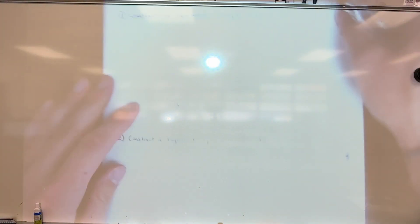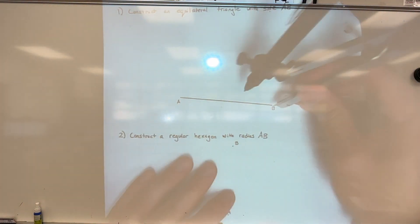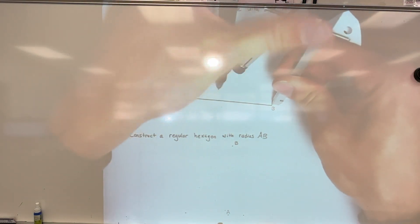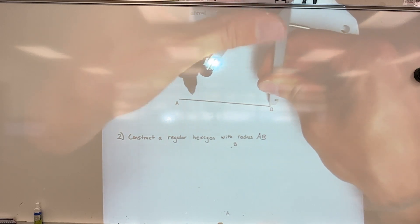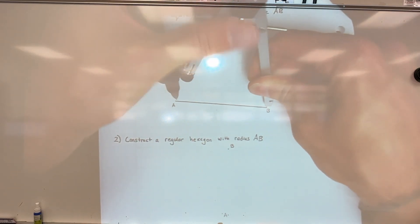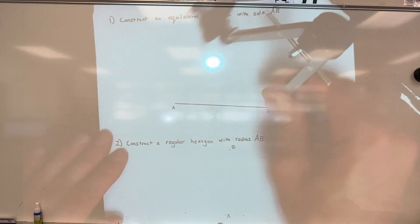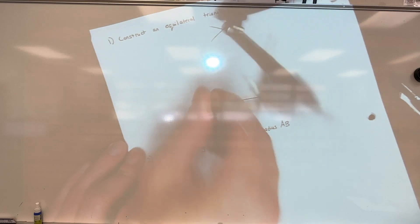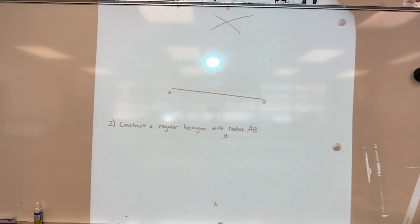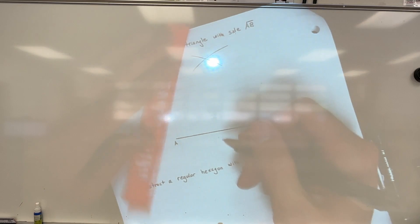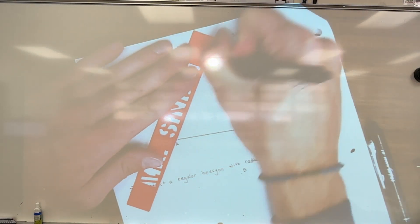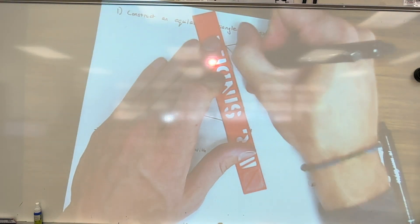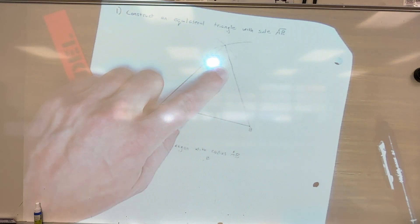Number one: equilateral triangle. The general idea is you're going to measure the distance between A and B with your compass. Make this measurement the same length as AB, then make a tick mark up here. Switch the metal tip to A instead of B and make a tick mark out here. At that intersection, use a straight edge to connect A to the intersection, then connect the intersection to B — and there is the equilateral triangle.